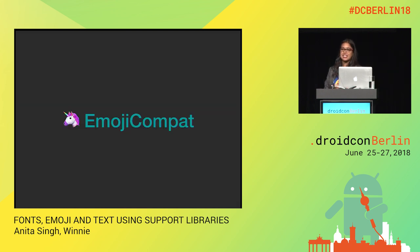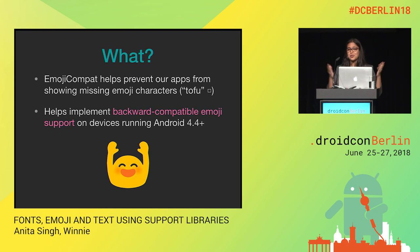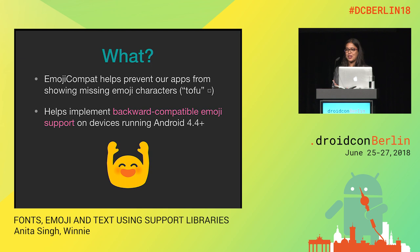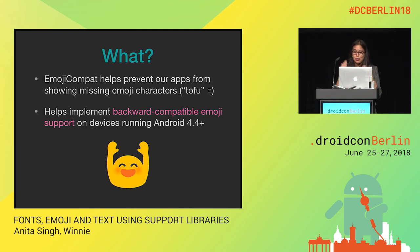This next topic is EmojiCompat, which can be used in conjunction with downloadable fonts. EmojiCompat essentially gives us access to backward compatible emoji support. It helps prevent seeing the squares of sadness — known as tofu — that you see instead of an emoji on older devices. When you see tofu, you don't know what your friend meant: were they being funny, sarcastic, or sad? Avoiding tofu is essentially the goal of EmojiCompat.